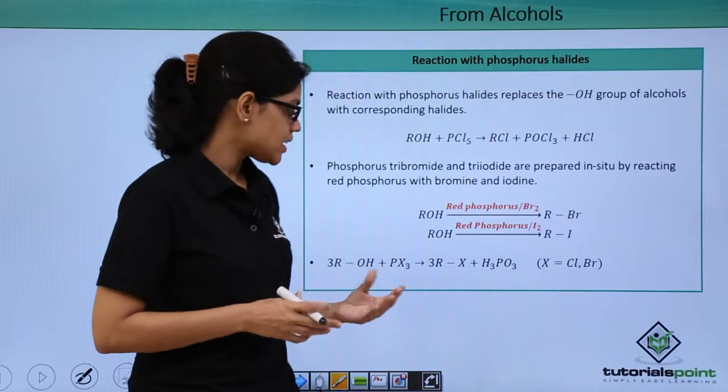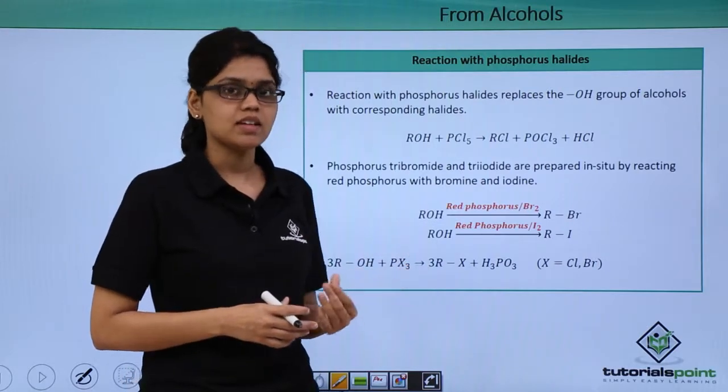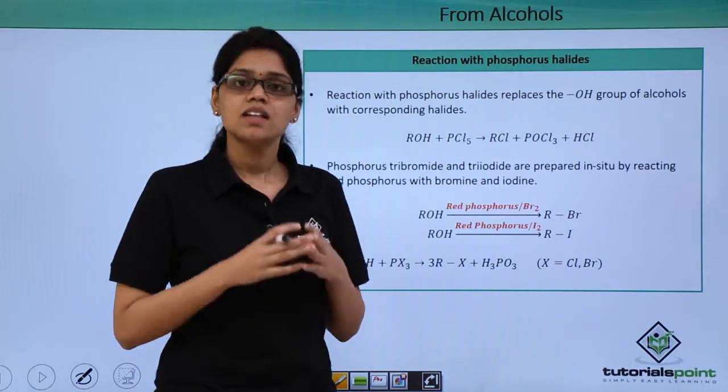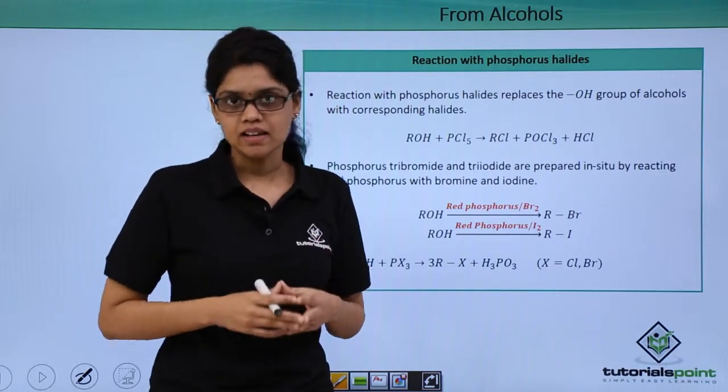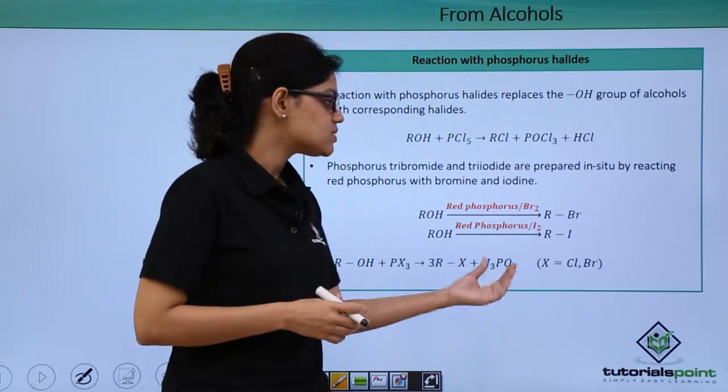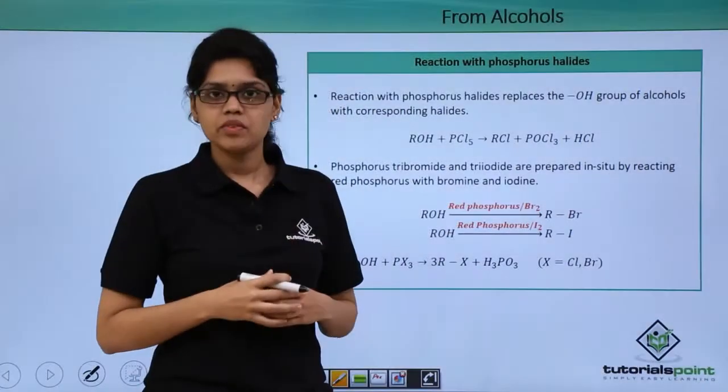As you can again see in this reaction, when we react alcohols with PX3 or phosphorous trihalides, three moles of corresponding alkyl halides are obtained along with H3PO3 as the byproduct.